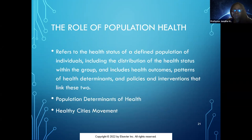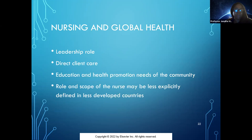The determinants of health refer to the health status of a defined population of individuals — making sure we understand what determinants are affecting their health: income, social status, education, environment, social environment, biology, genetics — all of those affect one's health.